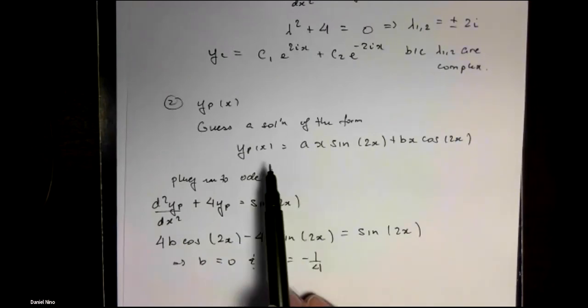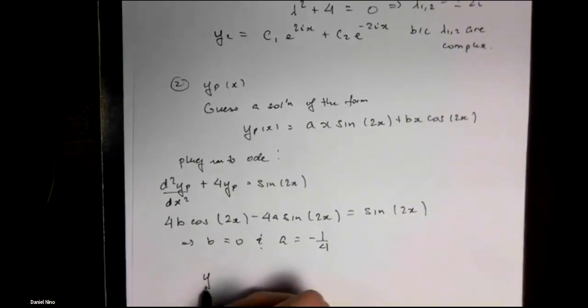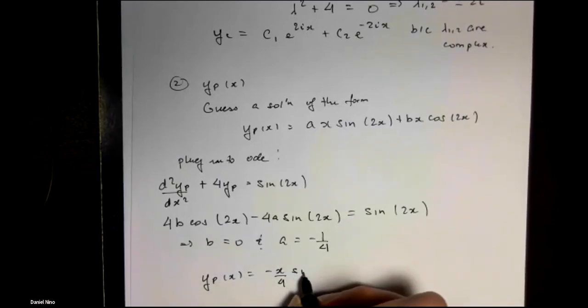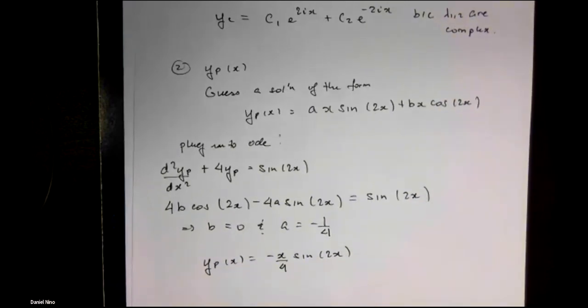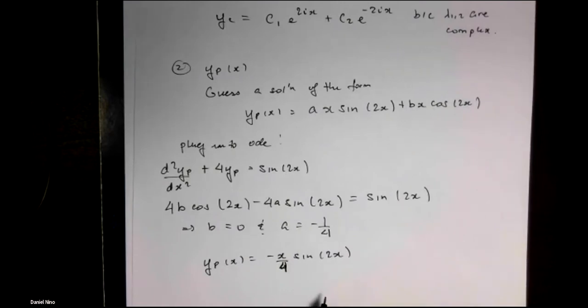We go back to our initial guess and plug in the values for a and b that we determined, and we're left with the particular solution: minus x over 4 sine 2x.